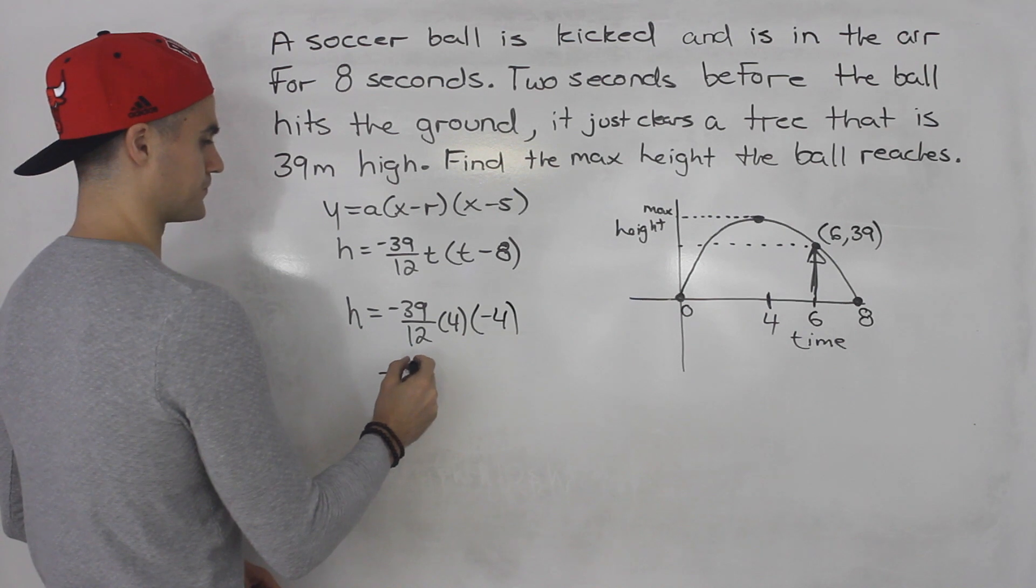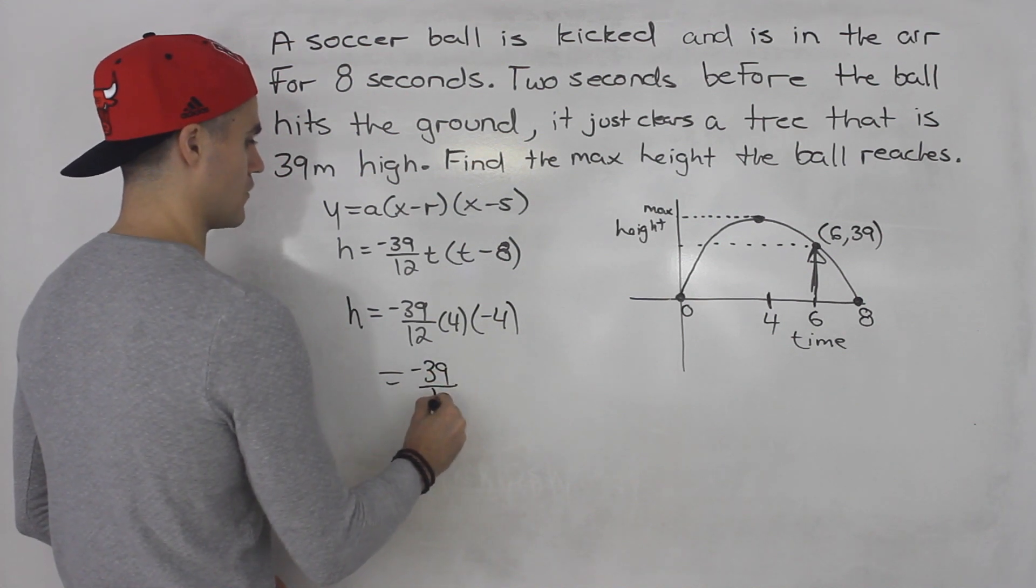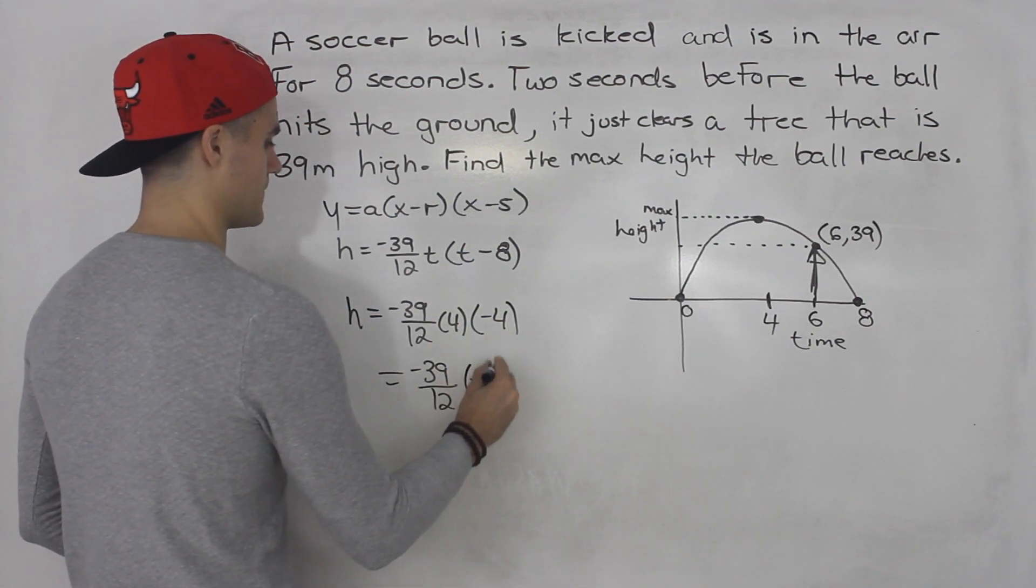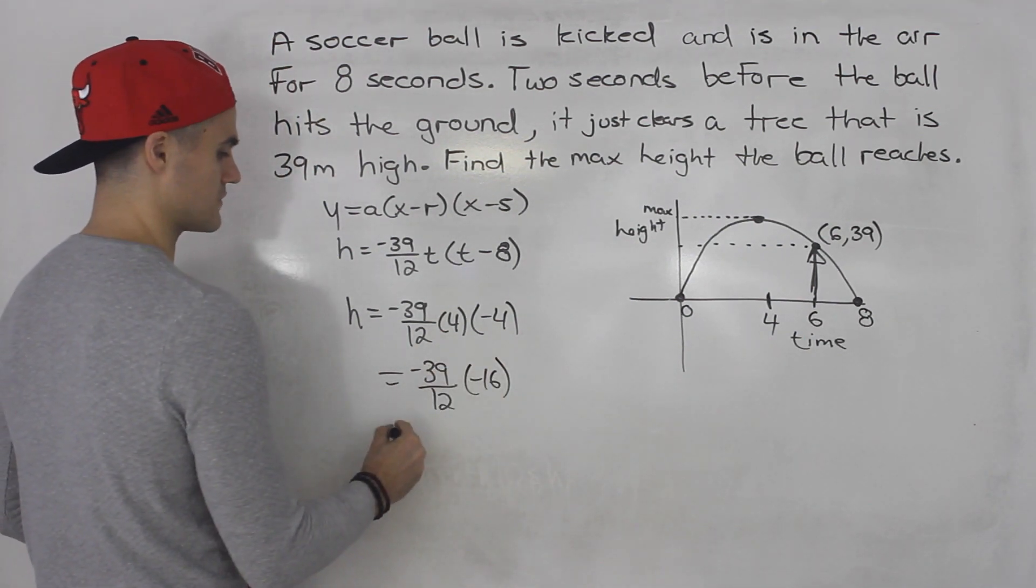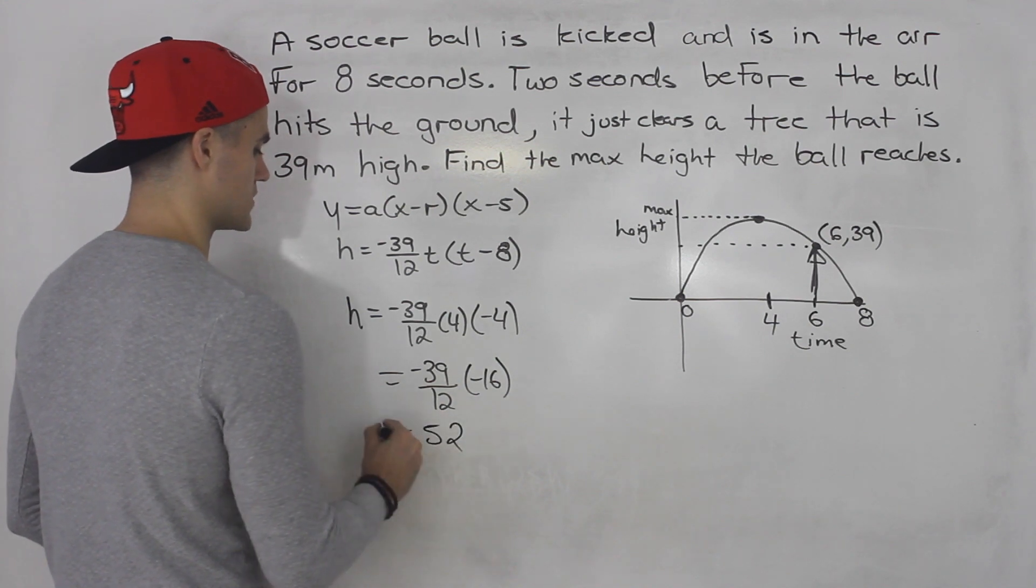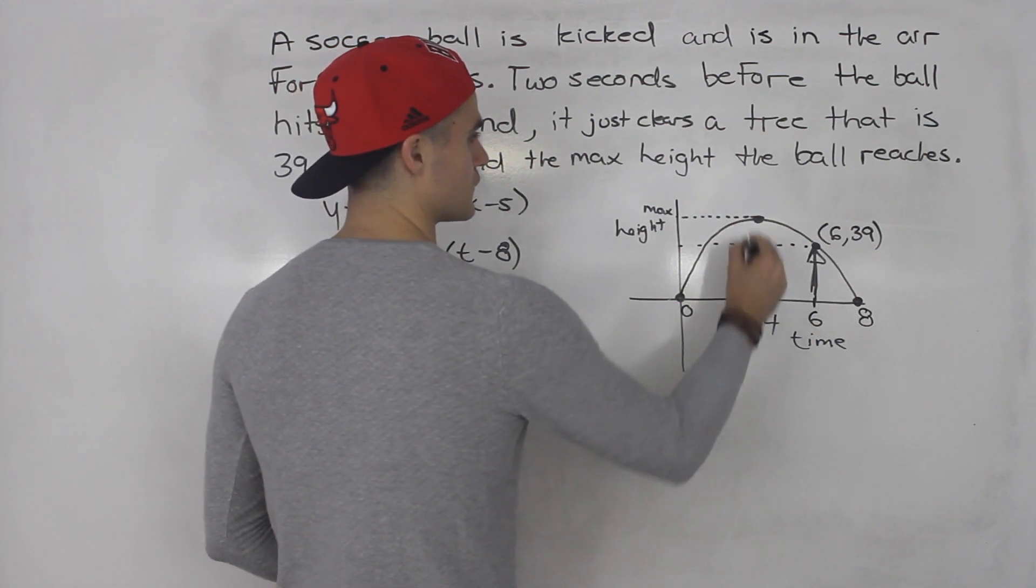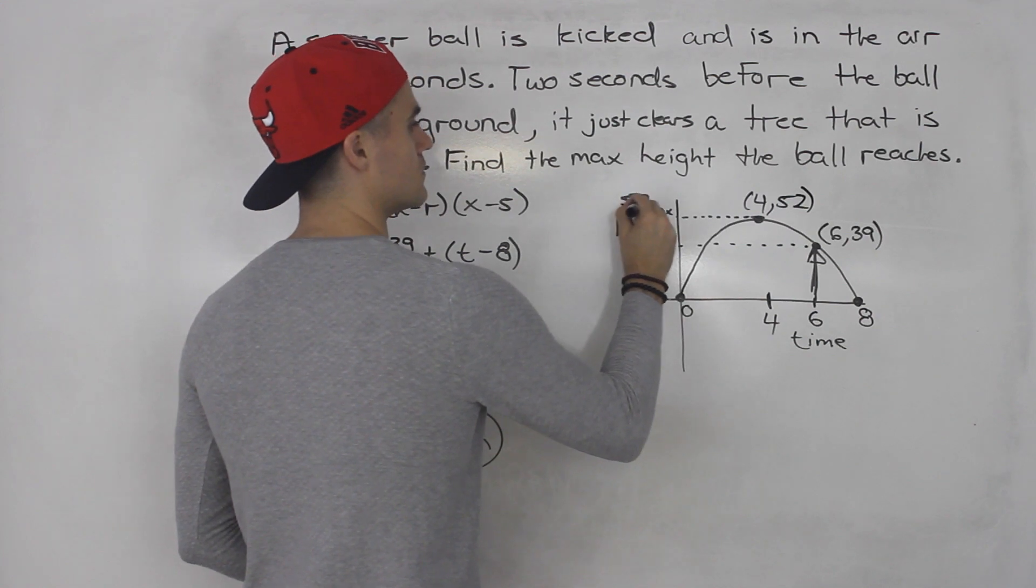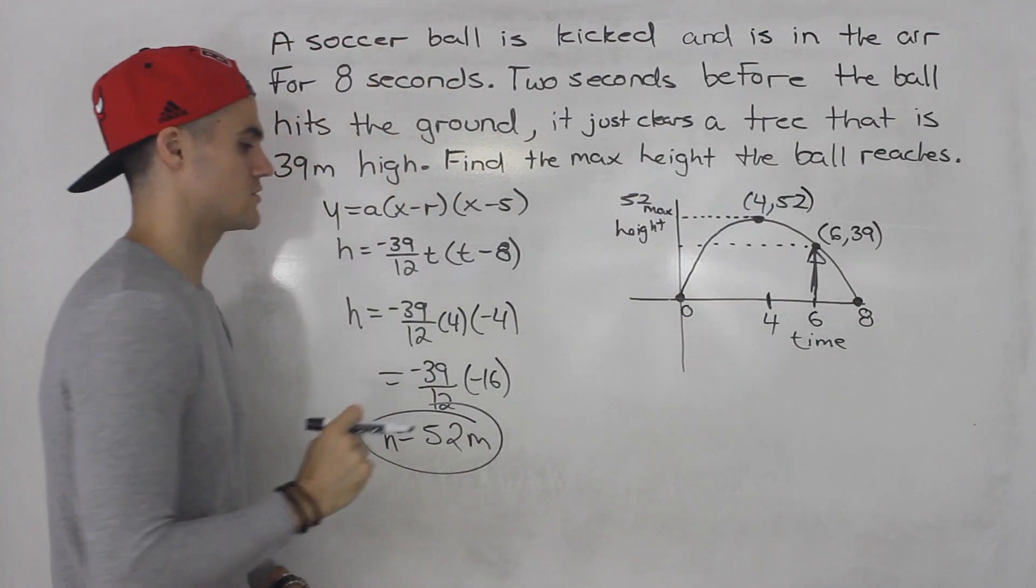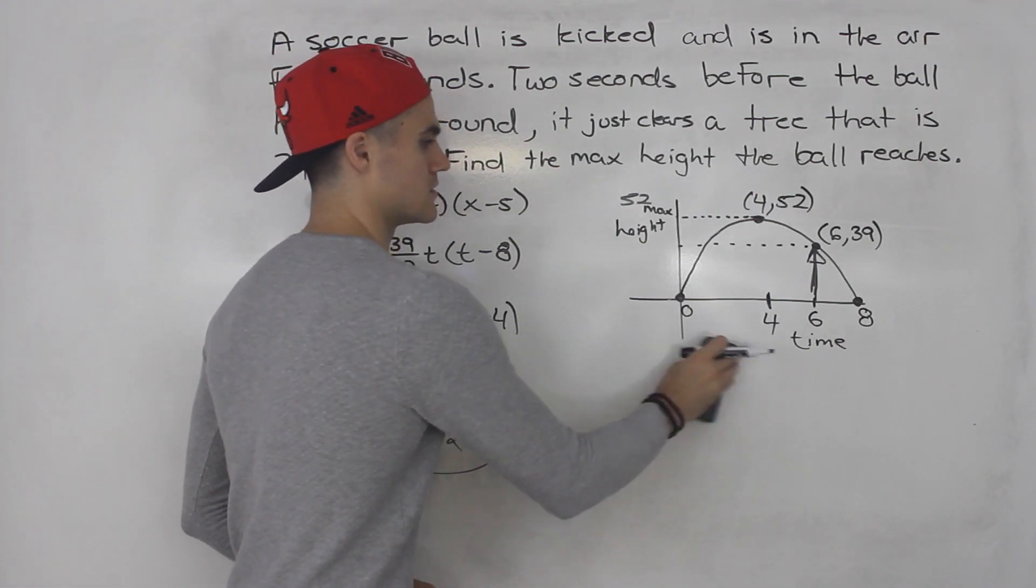So how can we do this? We'd have negative 39 over 12, negative four times negative four is negative 16. And then if you multiply all this out, negative 39 over 12 times negative 16, you would end up getting 52. And that is the answer. So the max height there is 52. So the coordinate of the vertex is four and 52, reaches a max height of 52 meters. Right? So that is one way to do it.